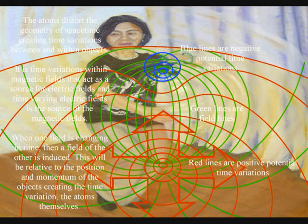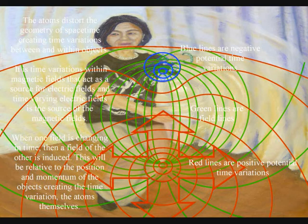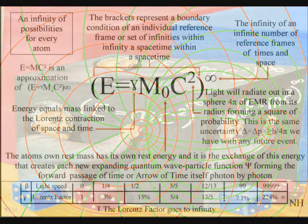Our universe is made up of an infinite number of reference frames, with the electrical potential of each reference frame relative to the energy or actions of the object forming the future potential.